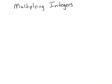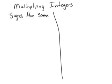Let's talk about multiplying integers. There are two possibilities when you're multiplying integers. The signs can be the same, or the signs can be different.